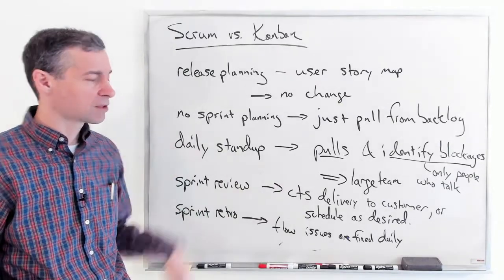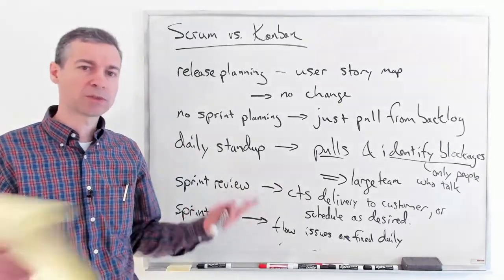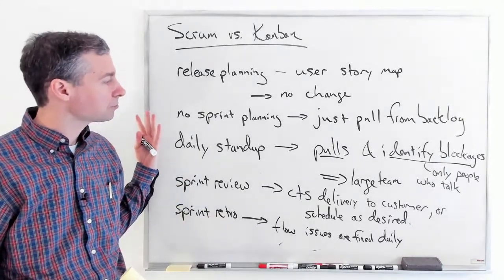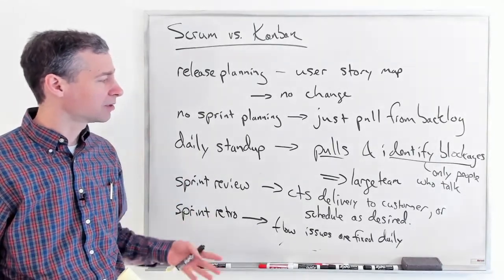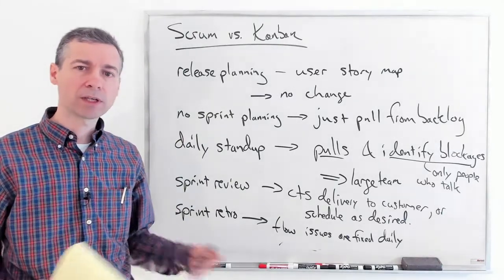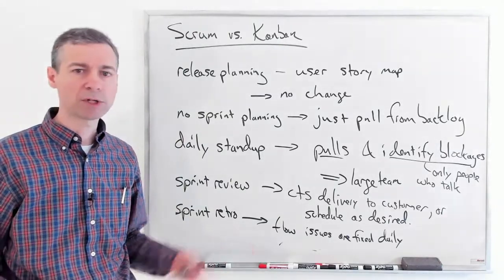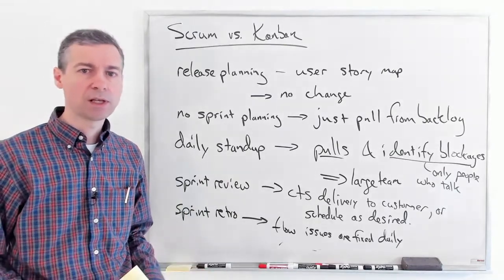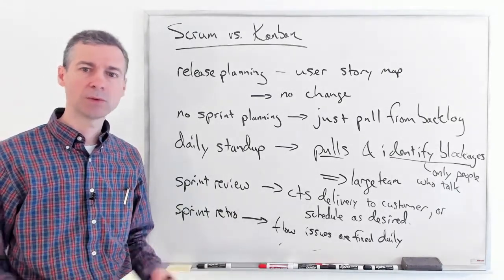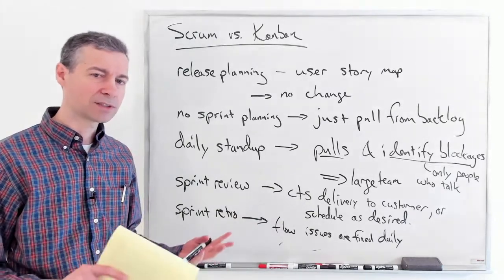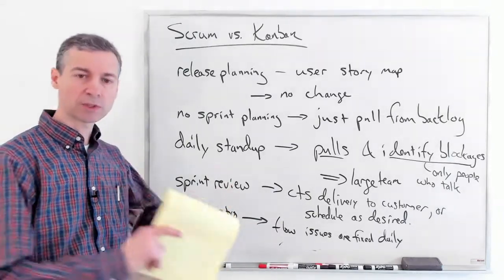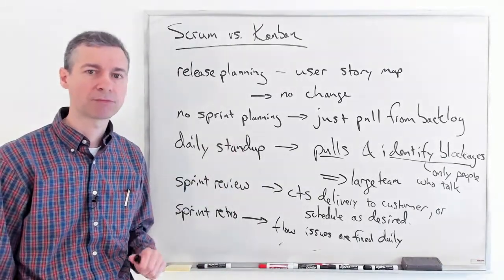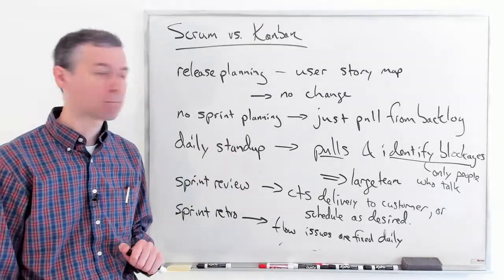Those are the key differences. The big thing is sprints are gone — it's continuous flow. But a lot of the XP practices like pair programming can still be done. We're still going to have all sorts of testing and code reviews. We're still going to use stories, specify them, and turn them into tasks. A lot of it is the same.